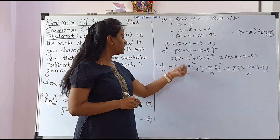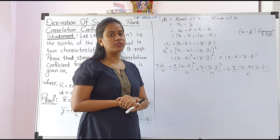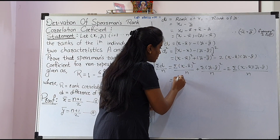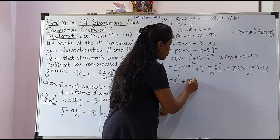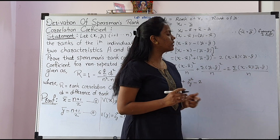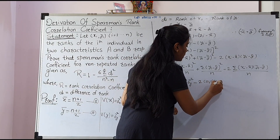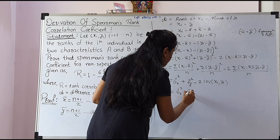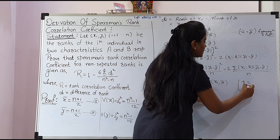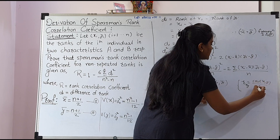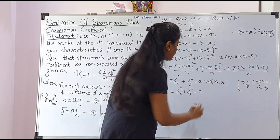Looking at the terms: (1/n)·Σ(xᵢ − x̄)² is the variance formula, so we write σₓ². Similarly (1/n)·Σ(yᵢ − ȳ)² = σᵧ². And (1/n)·Σ(xᵢ − x̄)(yᵢ − ȳ) is the covariance. So we get Σdᵢ²/n = σₓ² + σᵧ² − 2·Cov(x,y). Since rₓᵧ = Cov(x,y)/(σₓ·σᵧ), we have Cov(x,y) = rₓᵧ·σₓ·σᵧ. Also, since σₓ² = σᵧ², this becomes σₓ² + σₓ² − 2rₓᵧ·σₓ².